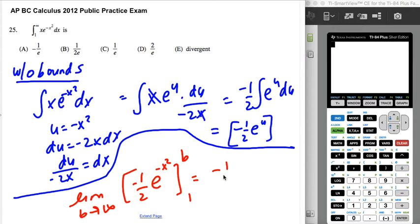So that's going to be a negative one half, and there's a limit in here, b approaches infinity, of e to the negative b squared, which we'll deal with in a sec, minus a negative one half e to the negative 1.